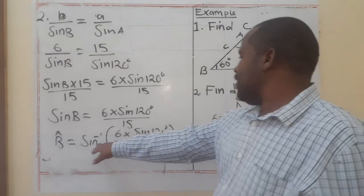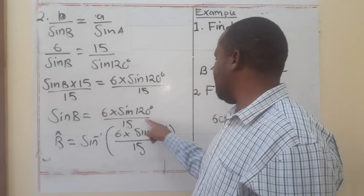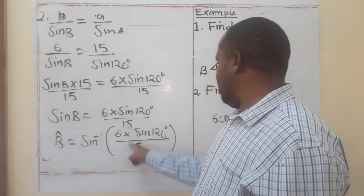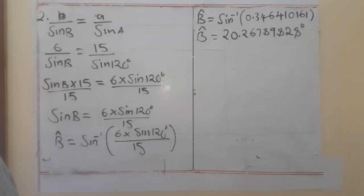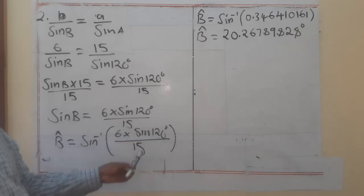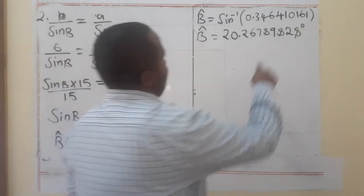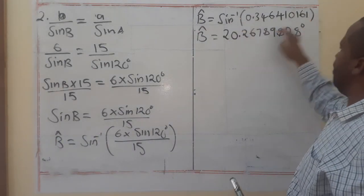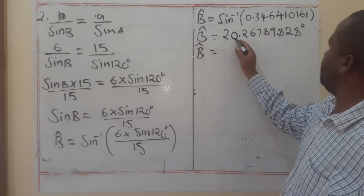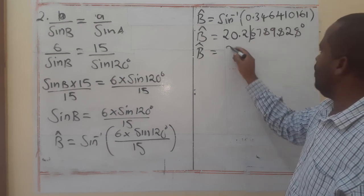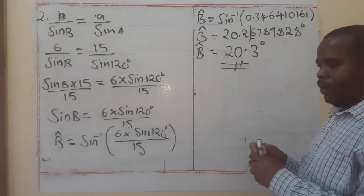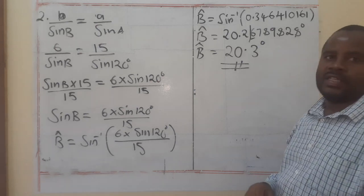To find angle B, we take the inverse sine: B equals sin⁻¹ of (6 × sin 120° ÷ 15). Work out the bracket first, then apply the inverse sine. Rounding to three significant figures, angle B equals 20.3 degrees. That is the value of angle B, and that completes this presentation — an exercise will be provided.